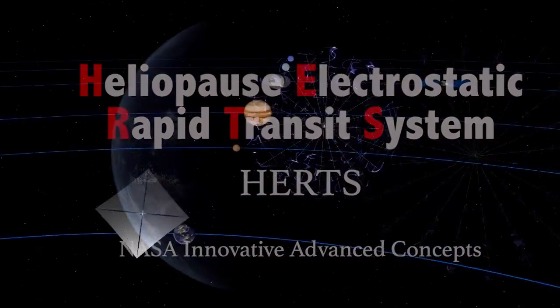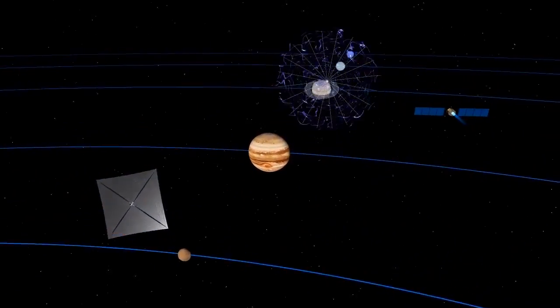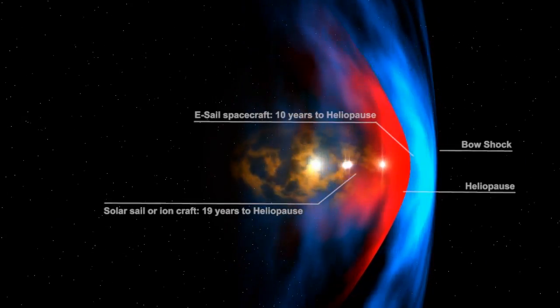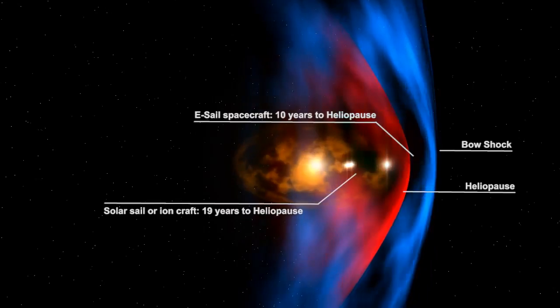The Hertz Electric Sail, or E-Sail, could send spacecraft to the edge of the solar system, known as the heliopause, approximately 100 astronomical units from Earth, in less than 10 years.